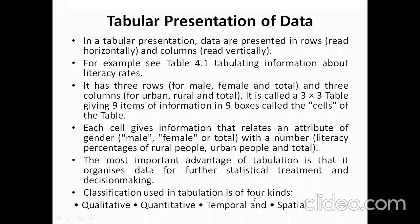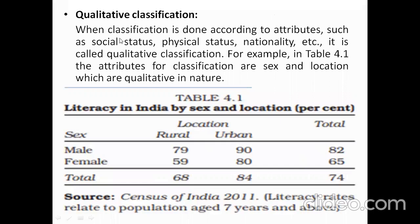Classification used in tabulation is of four kinds: qualitative, quantitative, temporal, and spatial. In qualitative classification, data are classified according to attributes such as social status, physical status, or nationality. For example, in table 4.1, the attributes for classification are sex and location, which are qualitative in nature — sex being male or female, and location being urban or rural area. The source of this table is Census of India 2011, relating to literacy rate for population aged seven years and above.